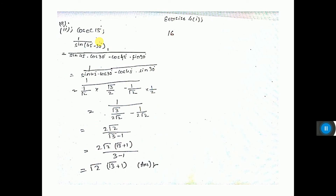Cosec 15° = 1/sin 15°. Now sin 15° = sin(45° - 30°). Using sin(A - B) = sin A cos B - cos A sin B, after substituting values, the LCM is 2√2. So sin 15° = (√3 - 1)/(2√2). Flipping and multiplying numerator and denominator by (√3 + 1): denominator becomes √3² - 1² = 2, which cancels. This gives the answer.